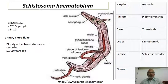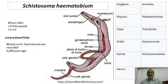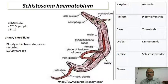Let us recap the classification: Animalia is the kingdom, Platyhelminthes is the phylum, Trematoda is the class, Diplostomida is the order, Schistosomatidae is the family, and Schistosoma is the genus.